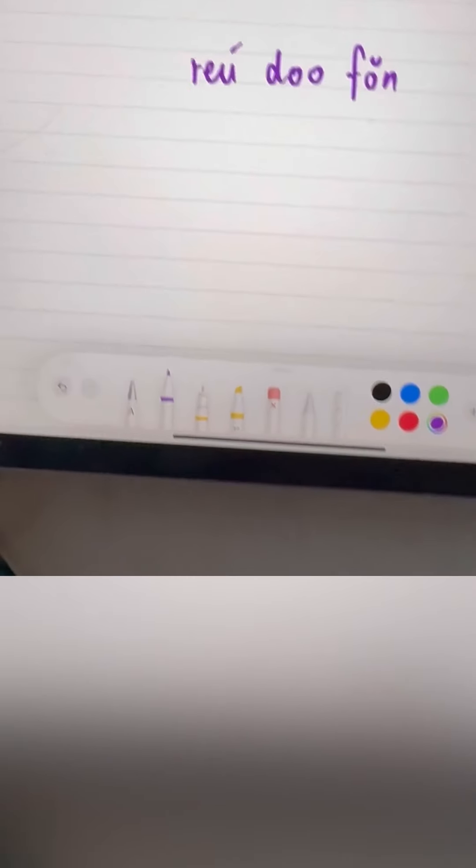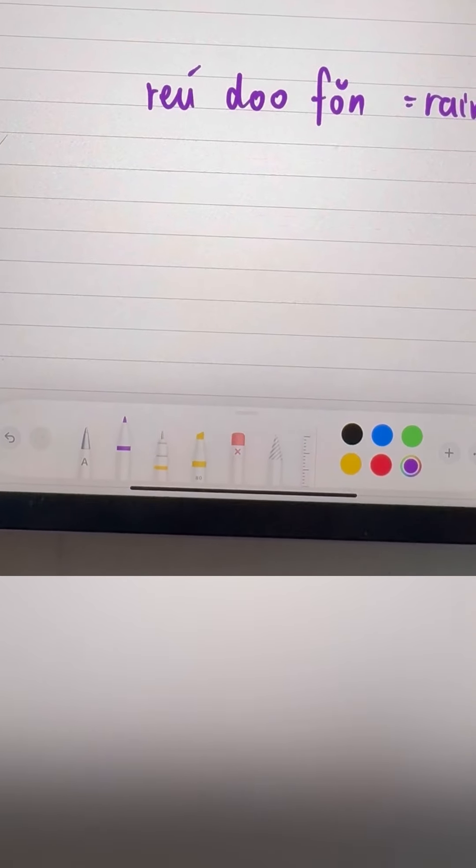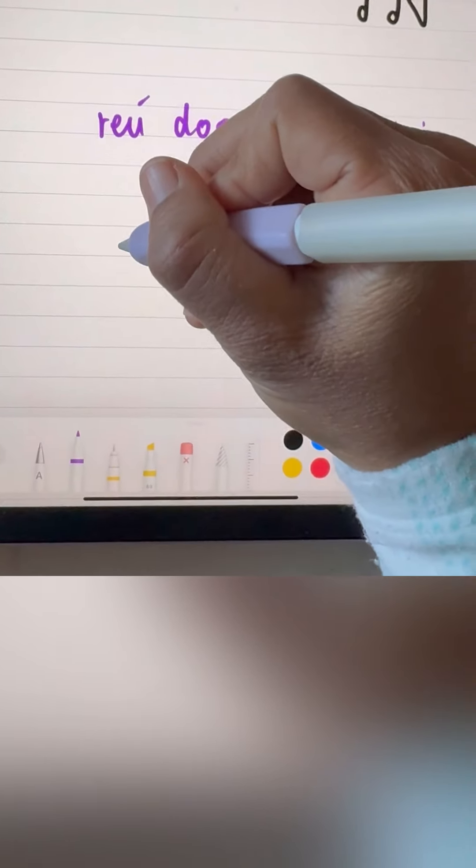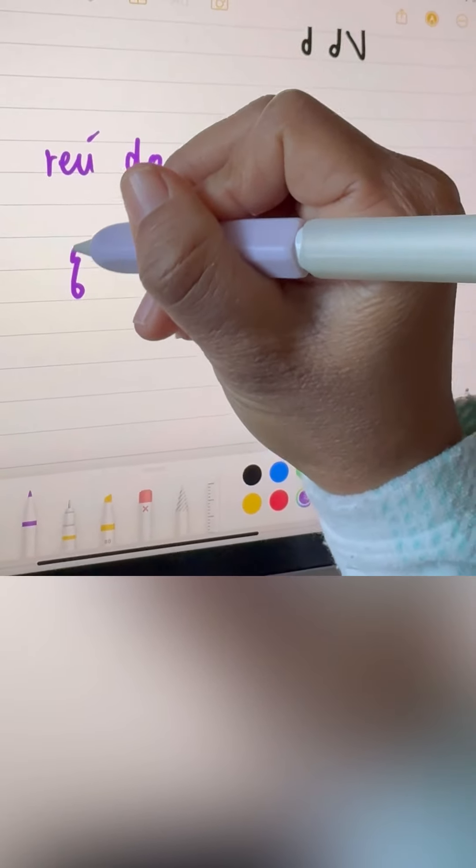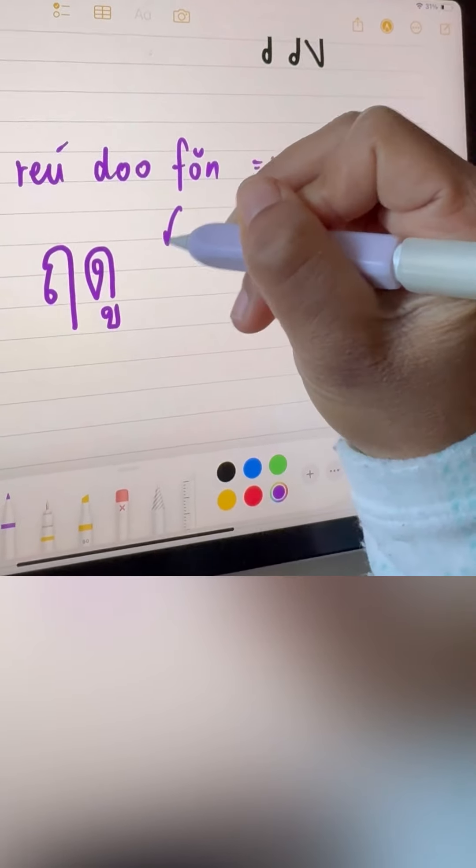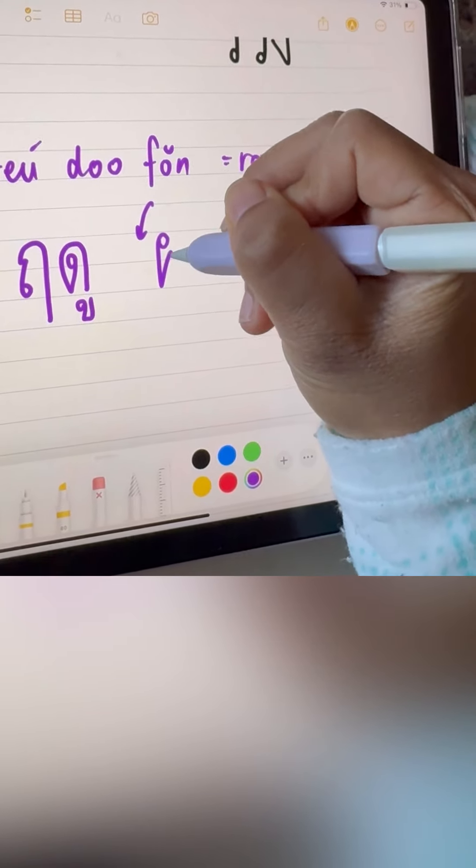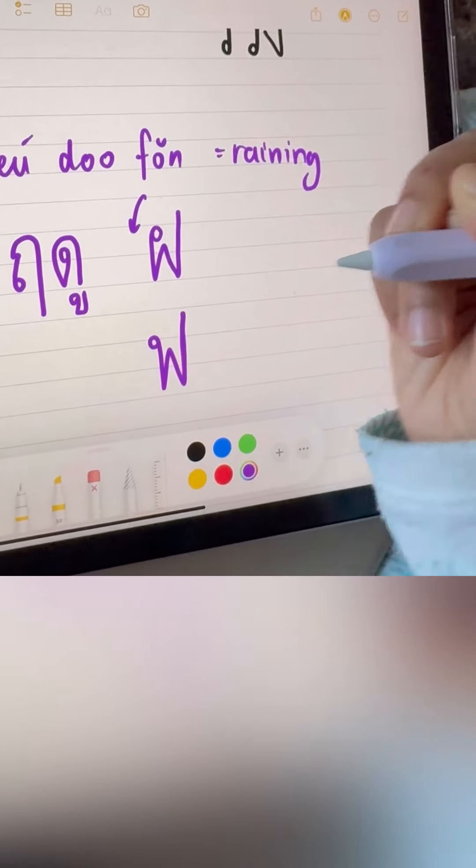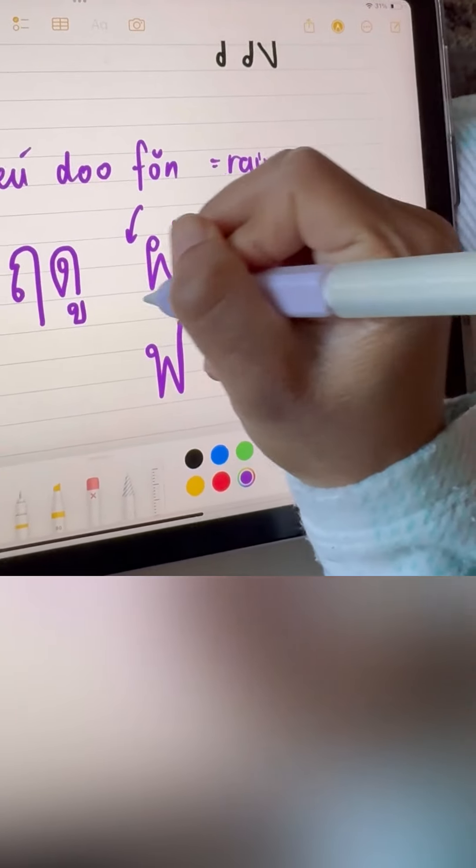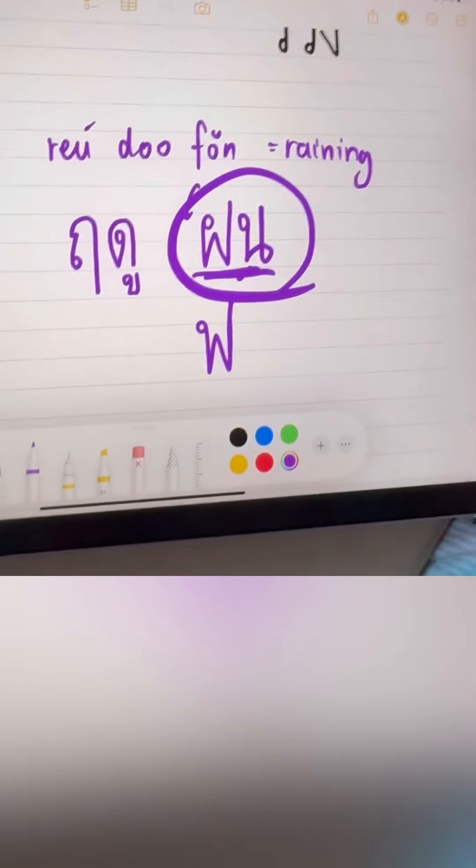For the last season, RUDU FON, raining season. We're gonna use the same again. RUDU. And then FON, do you have to use FOR FAH or FOR FUN? Which one? FOR FAH, BECAUSE OF THE RISING TONE. FON, RUDU FON. FON is rain, raining season, RUDU FON.